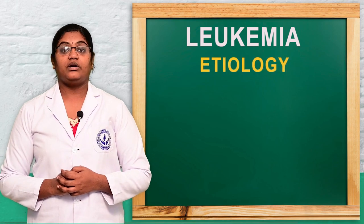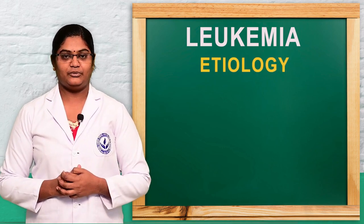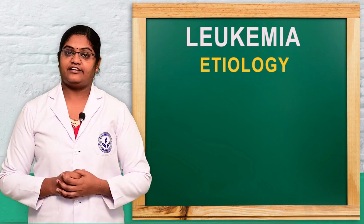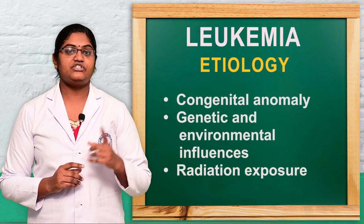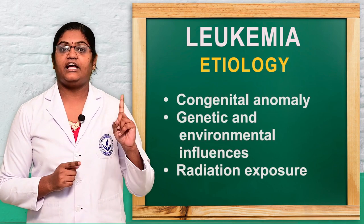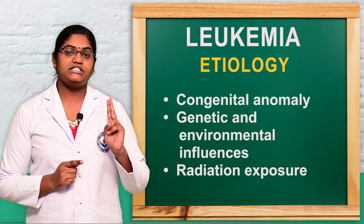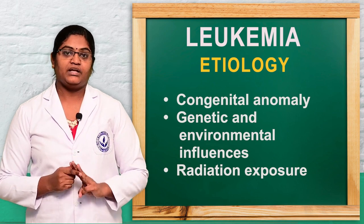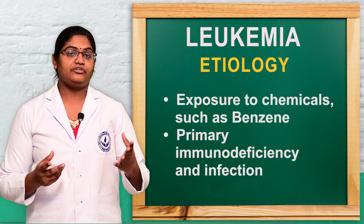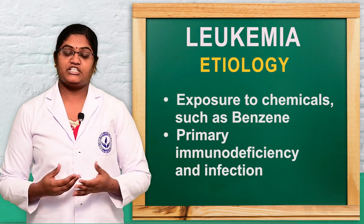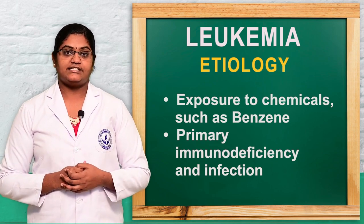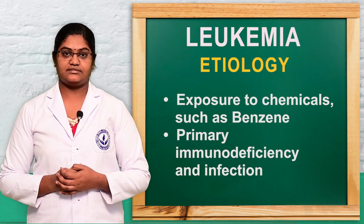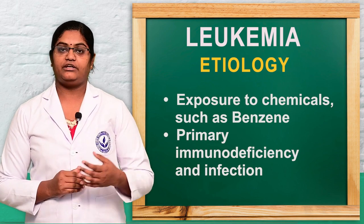Let's see what are the causes or etiological factors of leukemia. There are many different etiologies. The first is congenital anomalies, the second is genetic or environmental influences, the third is exposure to radiation, the fourth is long-term exposure to chemicals such as benzene, and also immunodeficiency and infections.